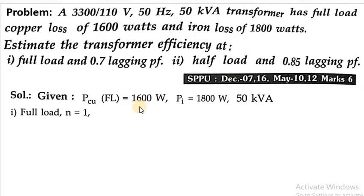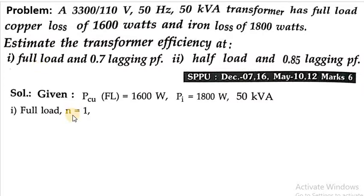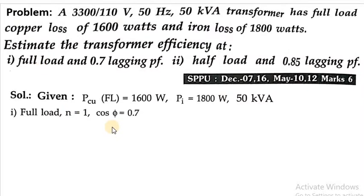Now to calculate the efficiency at full load condition, the fraction of the load, that is n, equals 1 because we want to calculate efficiency at full load. Full load means 100% load is connected to the transformer. Now, cos φ is also given, that is 0.7 lagging power factor. In this numerical, the nature is not so important; the magnitude of the power factor is important. So we take cos φ equal to 0.7.